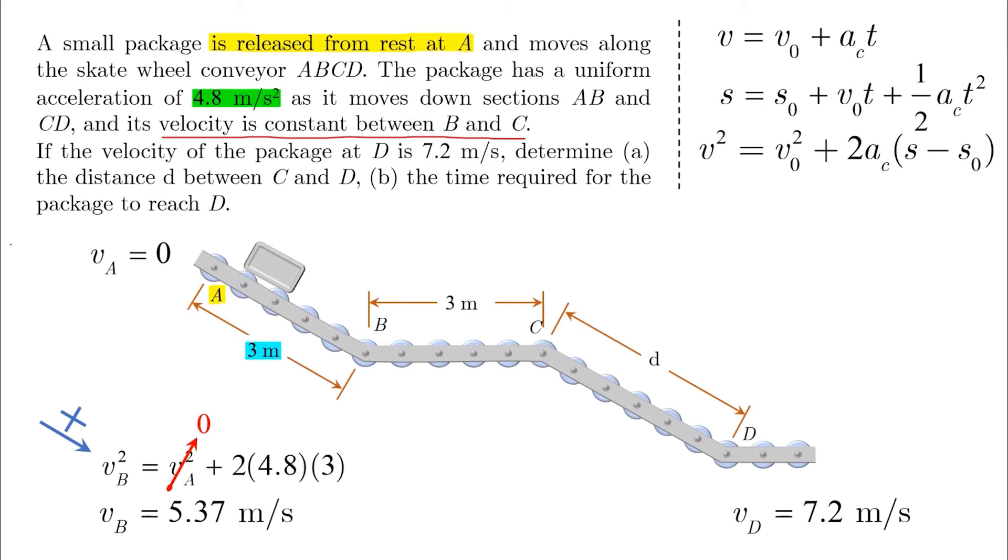So now that we have VB, VC is equal to VB because of the constant speed. We also have the acceleration given, the final velocity given, and all what we need now is to calculate the distance D, which is S minus S0.